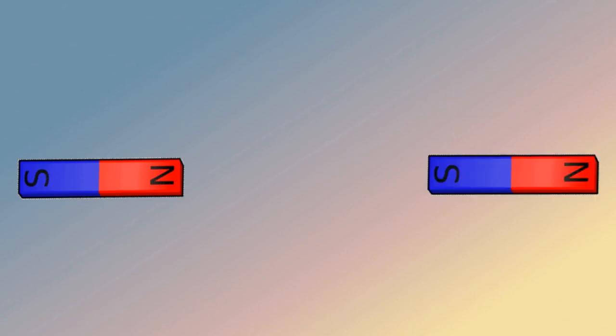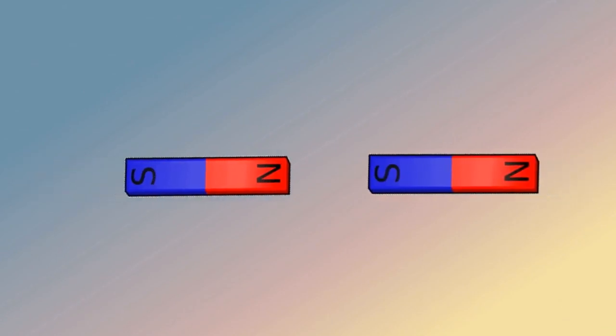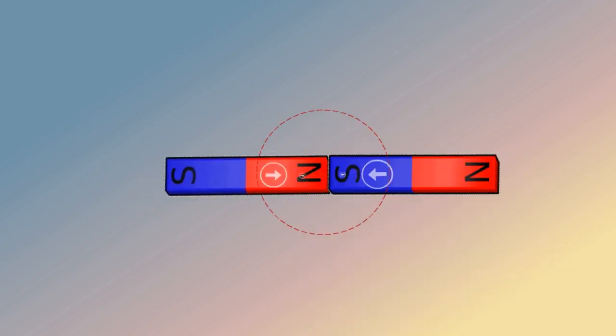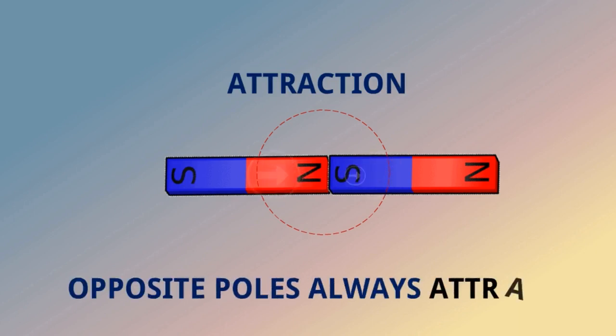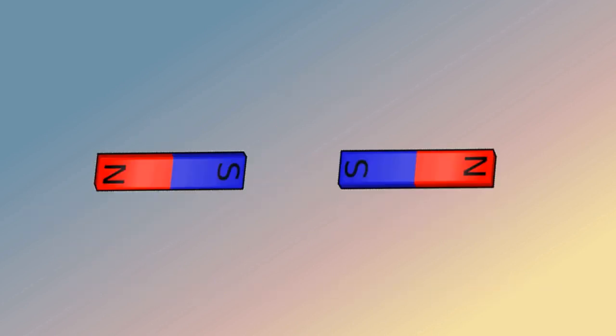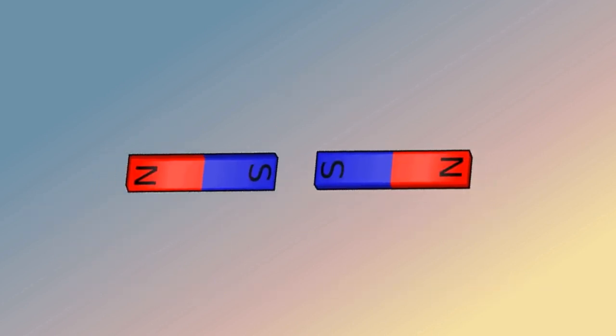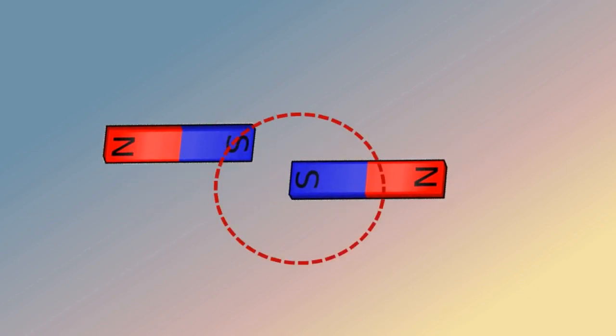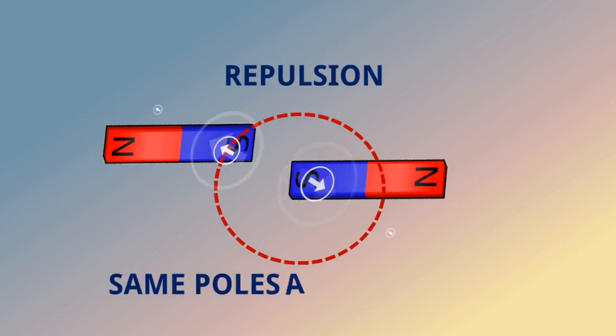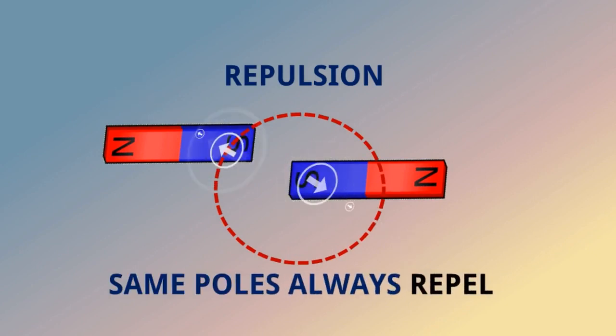Now we'll see some interesting thing. If we take two magnets, opposite poles are attractive because the north pole and south pole attract each other. So opposite poles always attract. If we take same poles then it will repel like this. So this is called repulsion. We can say same poles always repel.